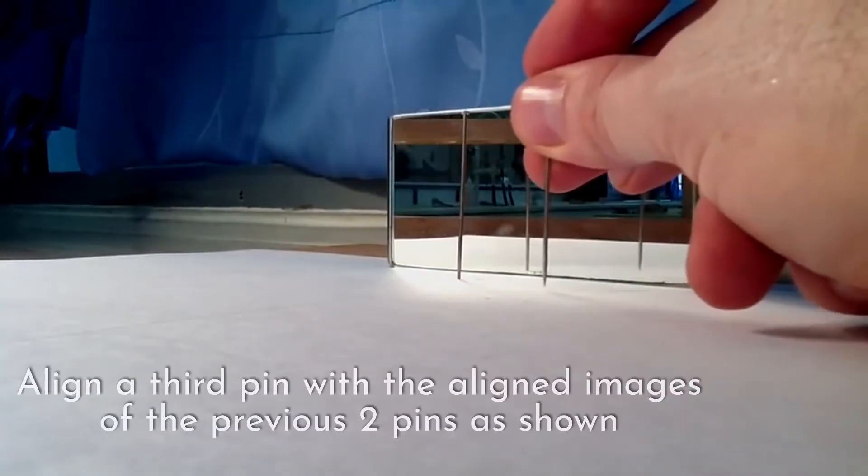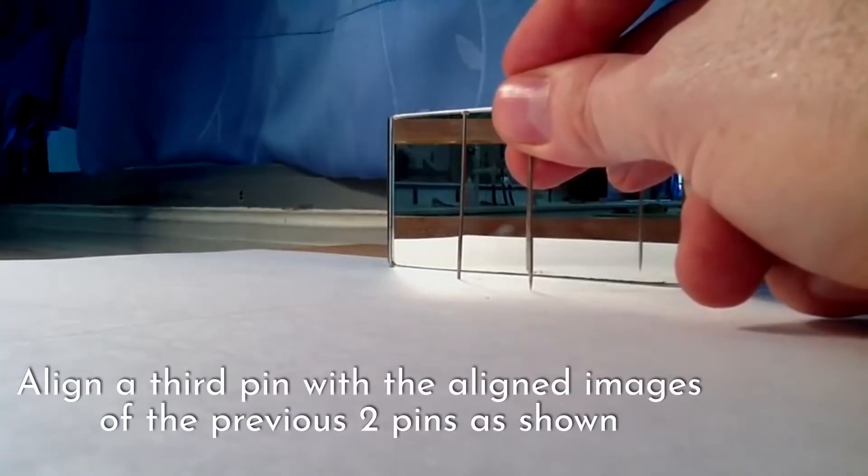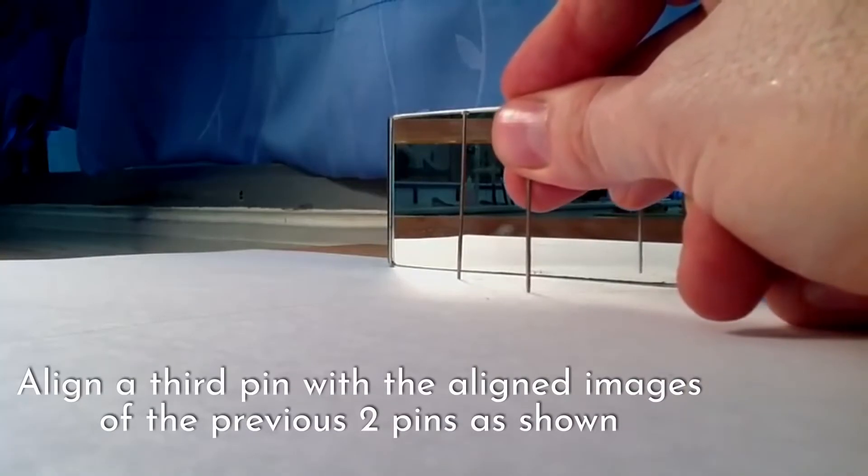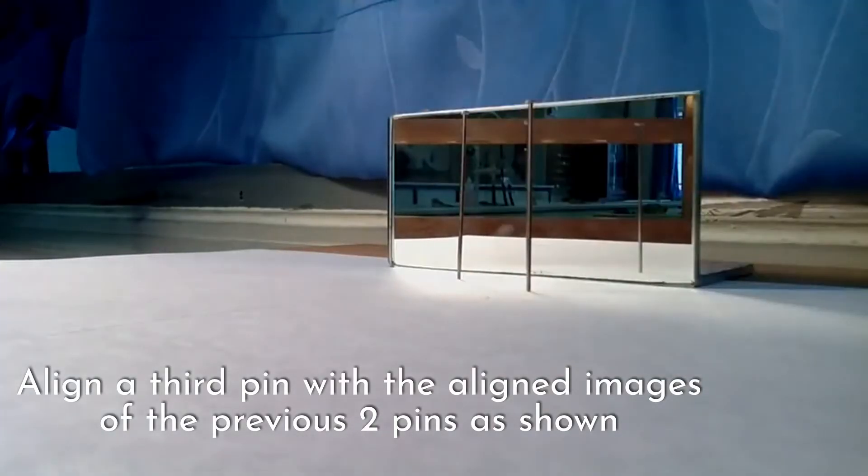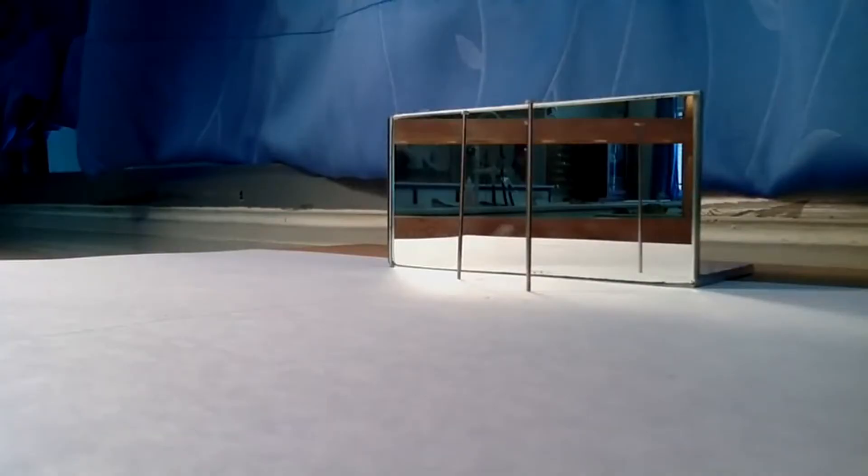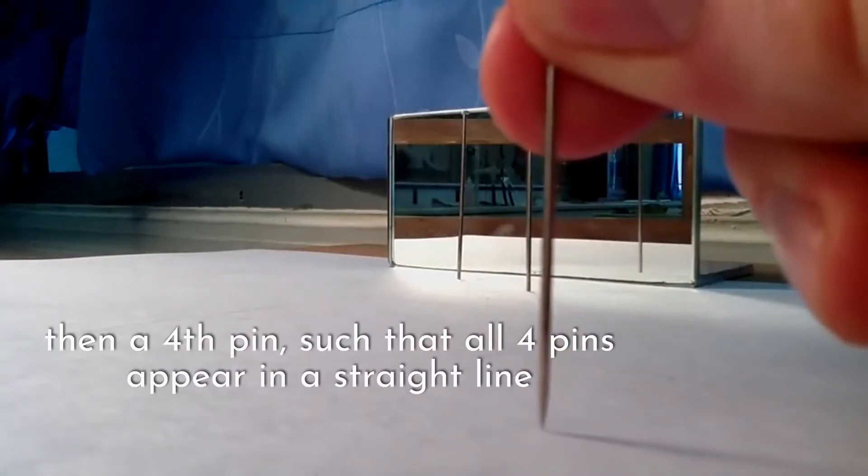You then need to take a third optical pin. Place this in front of the two reflections. And you will now notice you can only see the third pin. The two reflections are hidden behind the third pin.